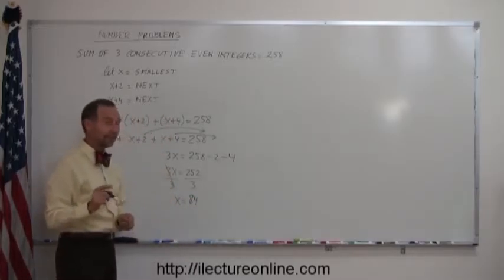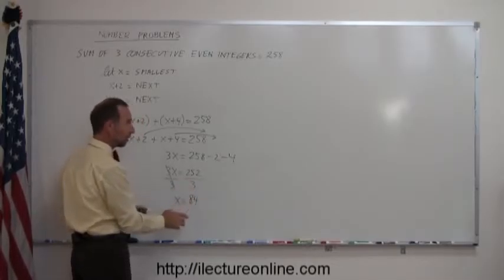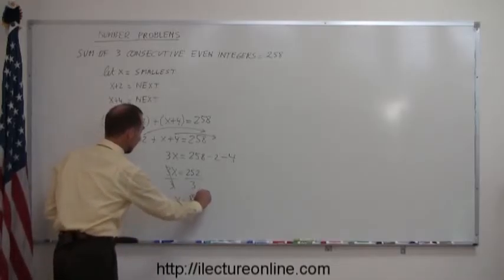And again, quickly to check if I did this correctly, if I multiply 3 times 80, I get 240, 3 times 4 I get 12, 240 plus 12, that's 252. And that should be correct.